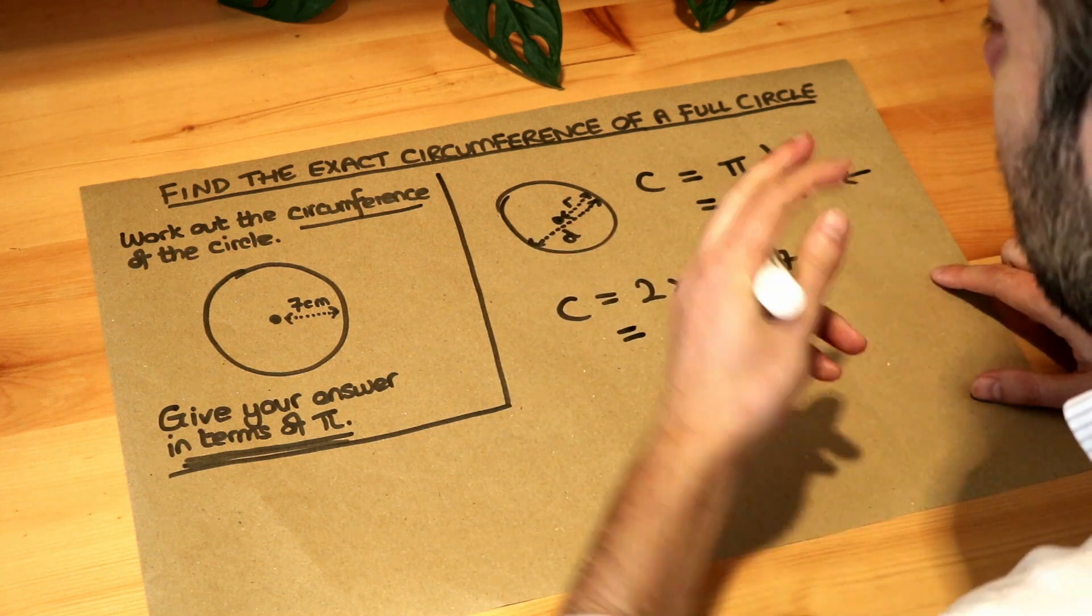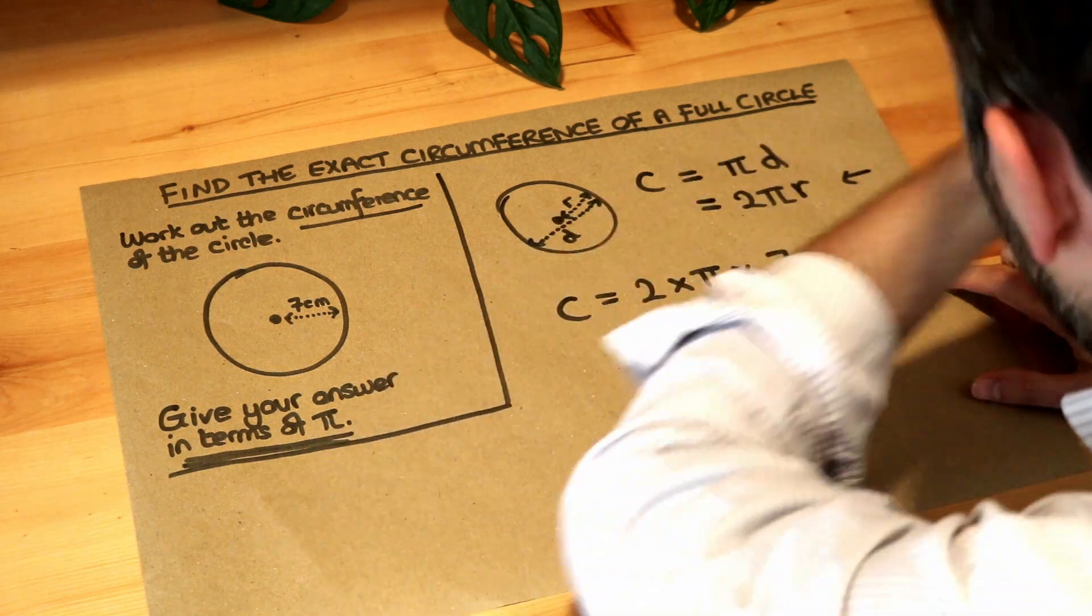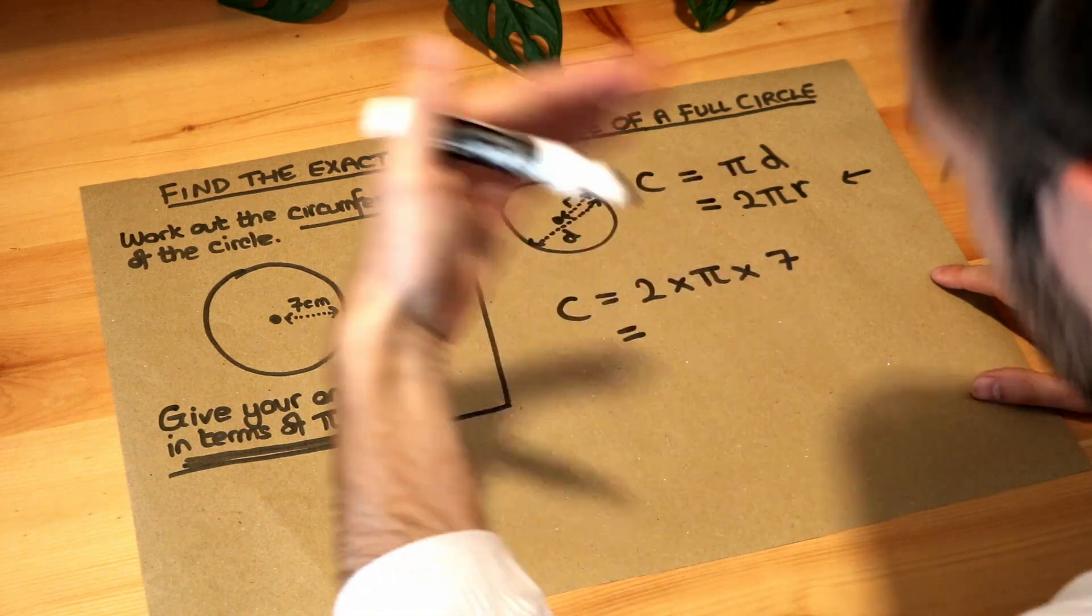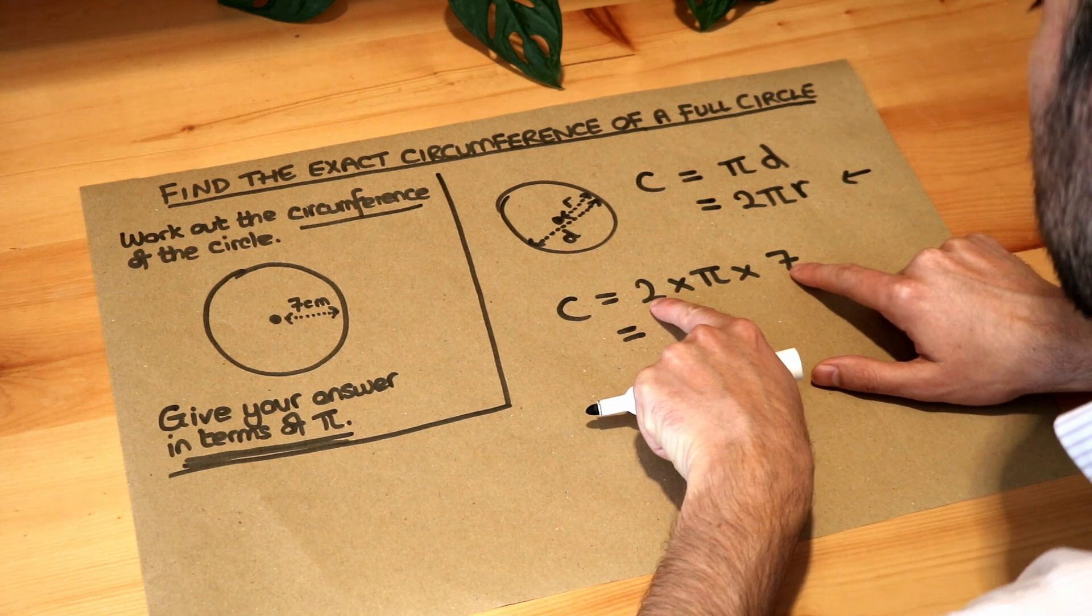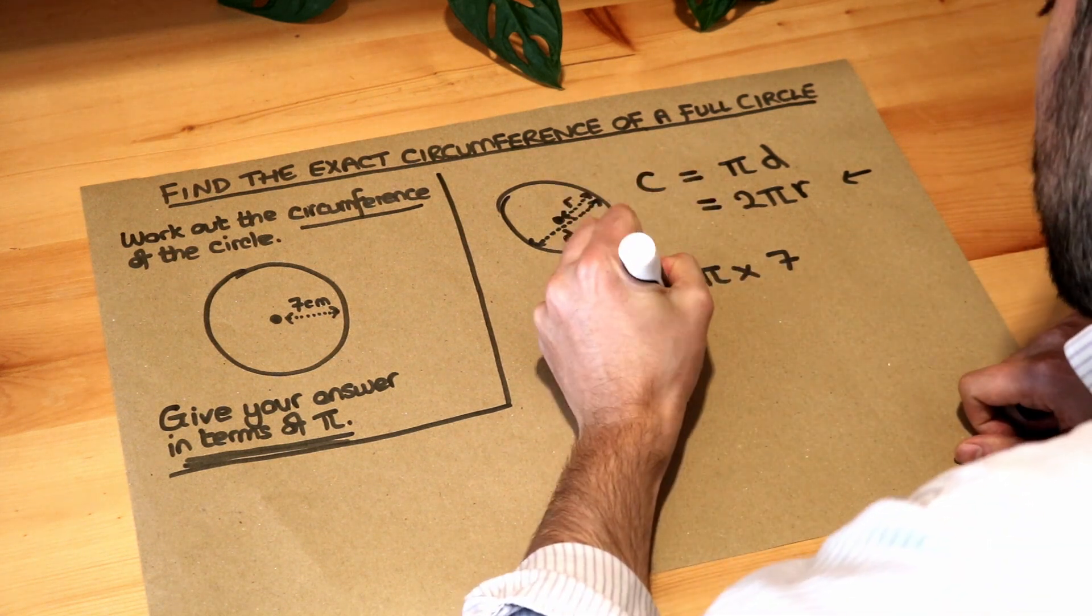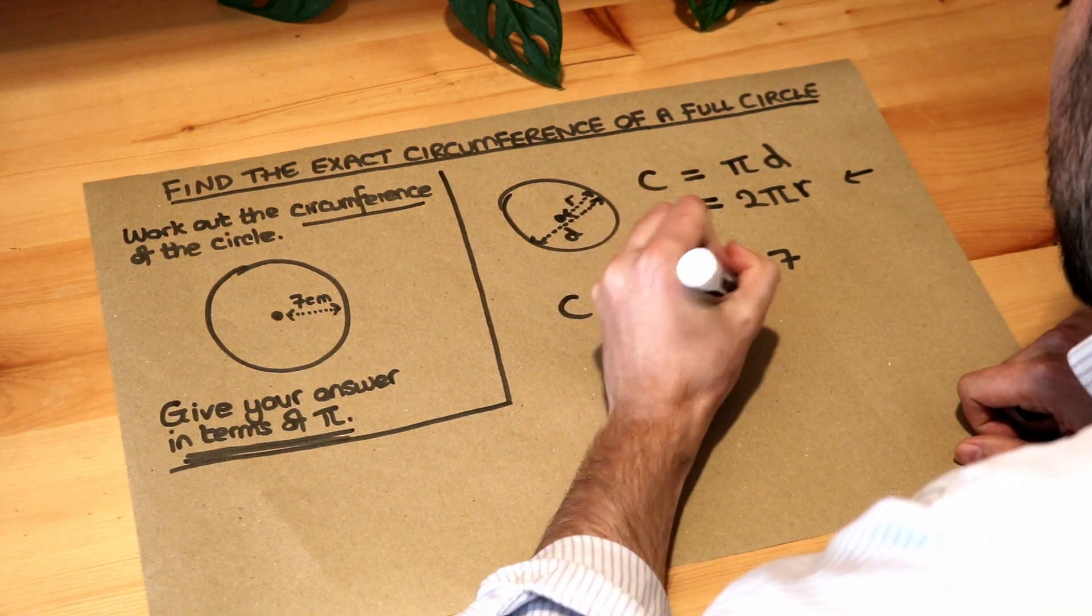We don't want to put this on our calculator because we don't want to end up with a decimal. Although actually your calculator should give your answer something pi. Now, let's do the numbers first. Two times seven is 14. And it's 14 times pi. So we write the answer as 14 pi.